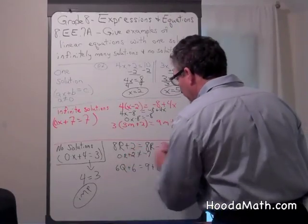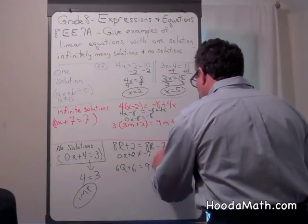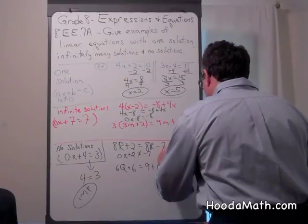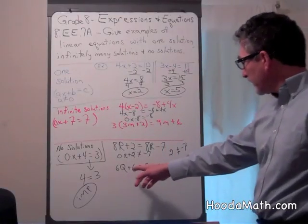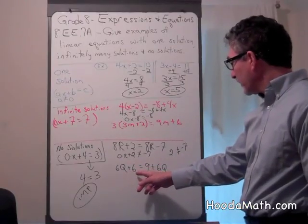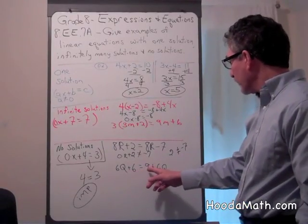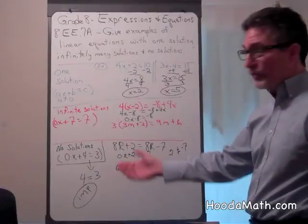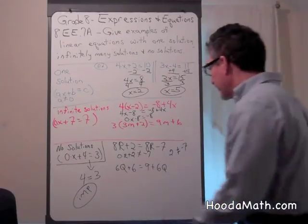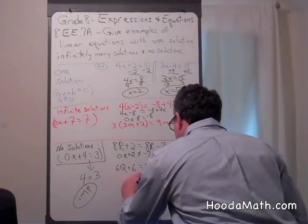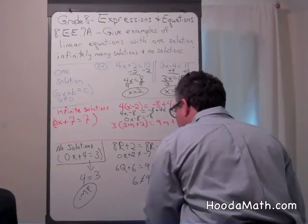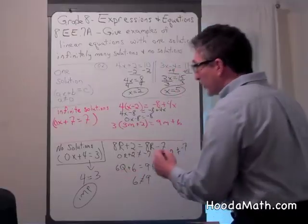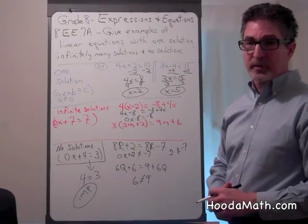They do not equal because 2 does not equal negative 7. Looking here, 6q plus 6 equals 9 plus 6q. If we subtract 6q from both sides, we would get 6 equals 9. We know this is impossible. 6 does not equal 9, so there are no solutions for this equation.